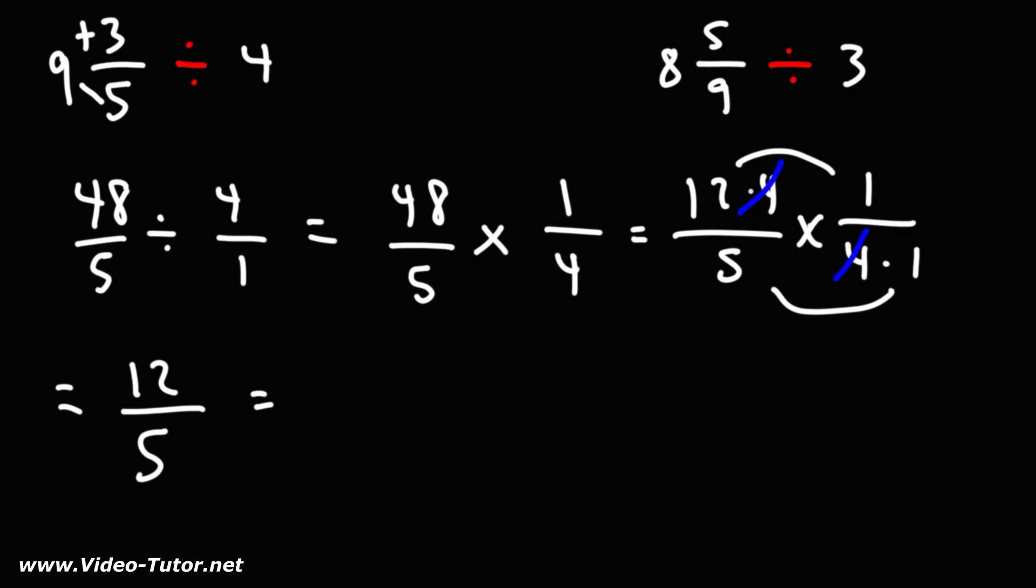Now let's convert the improper fraction to a mixed number. I'm going to break up 12 into 10 plus 2. So 12 over 5 is 10 over 5 plus 2 over 5. 10 divided by 5 is 2. So we have 2 plus 2 fifths. And we can write that as a mixed number, 2 and 2 fifths.